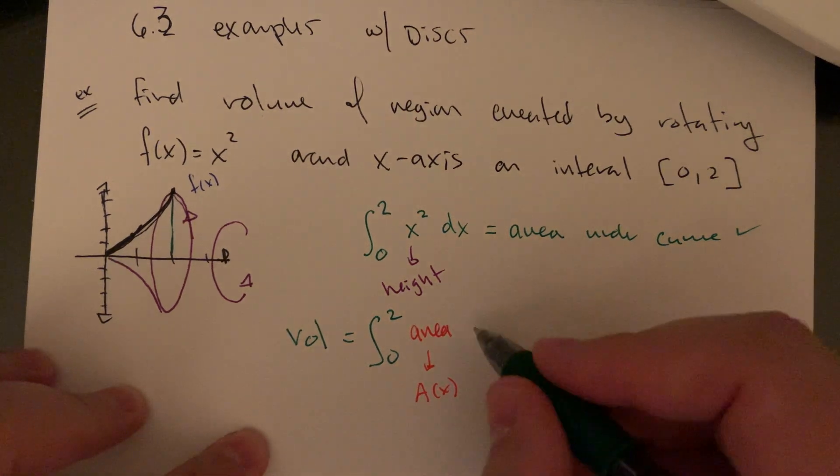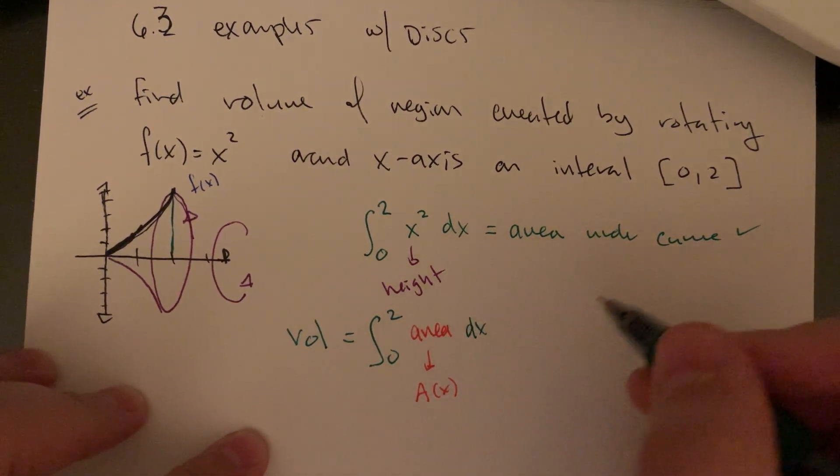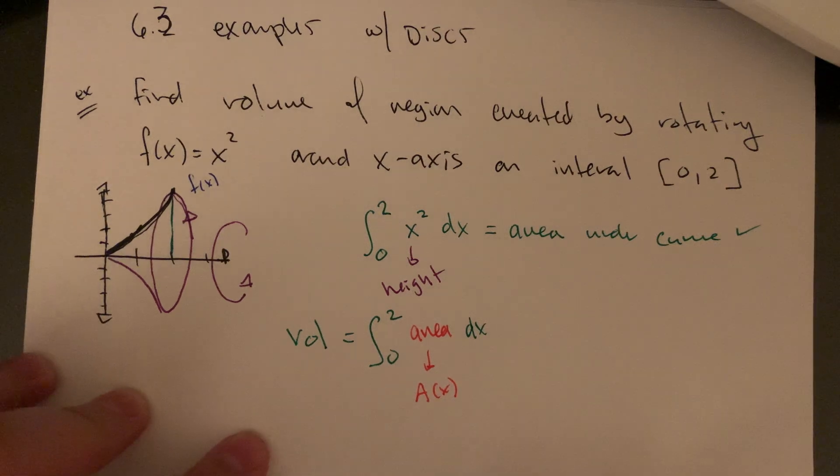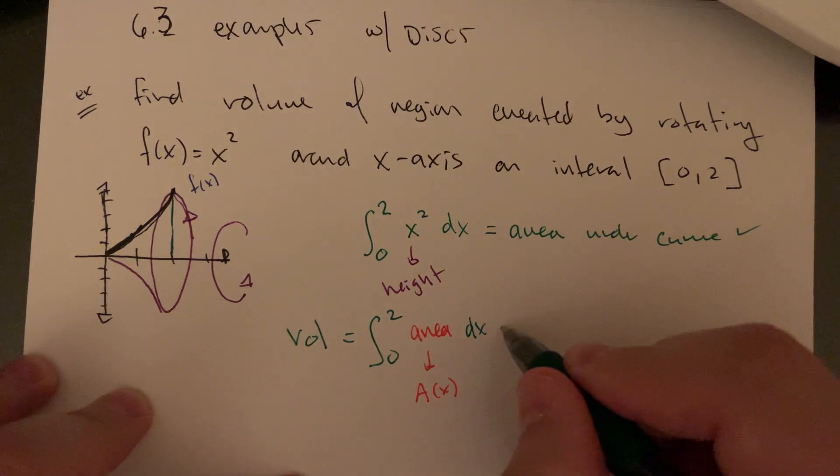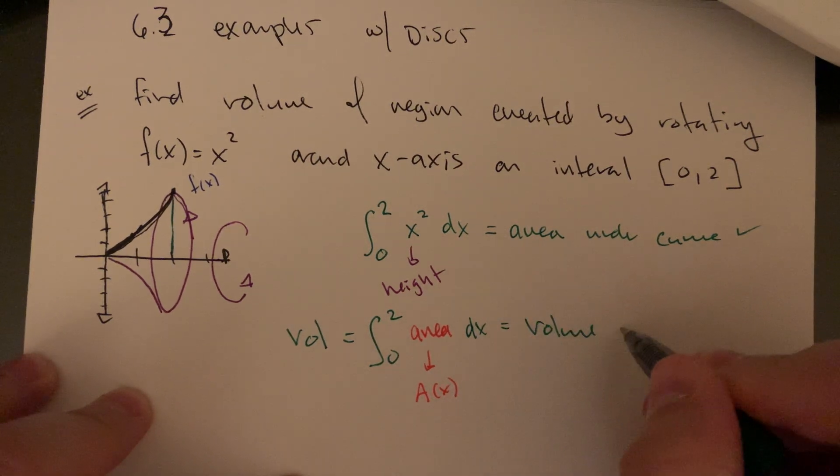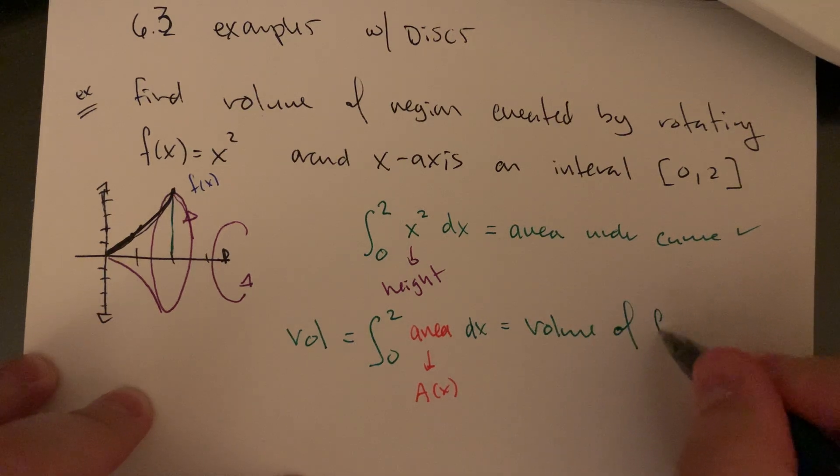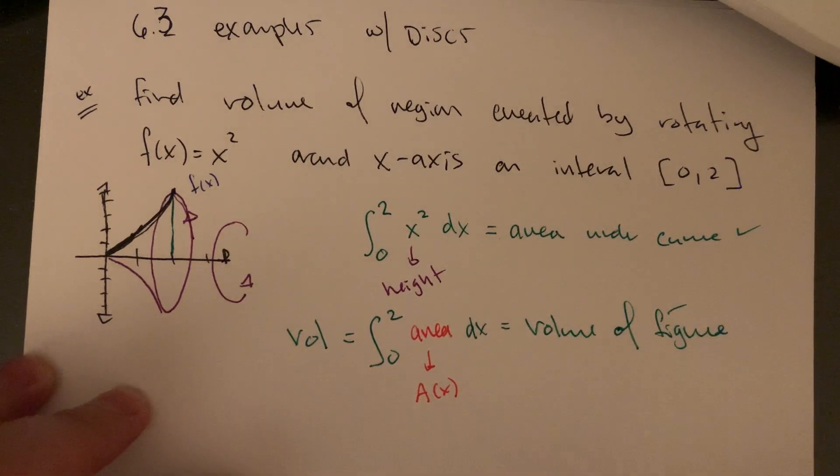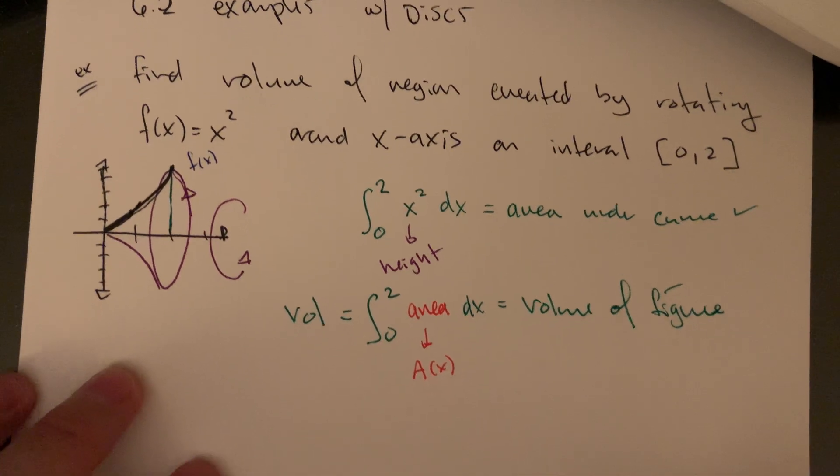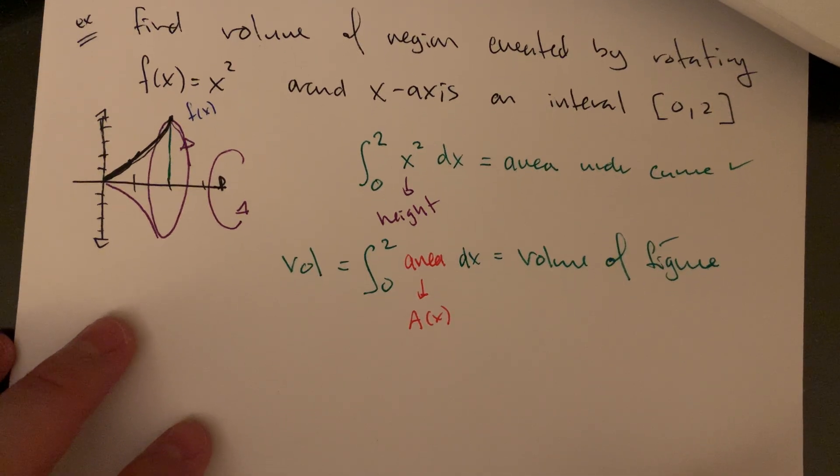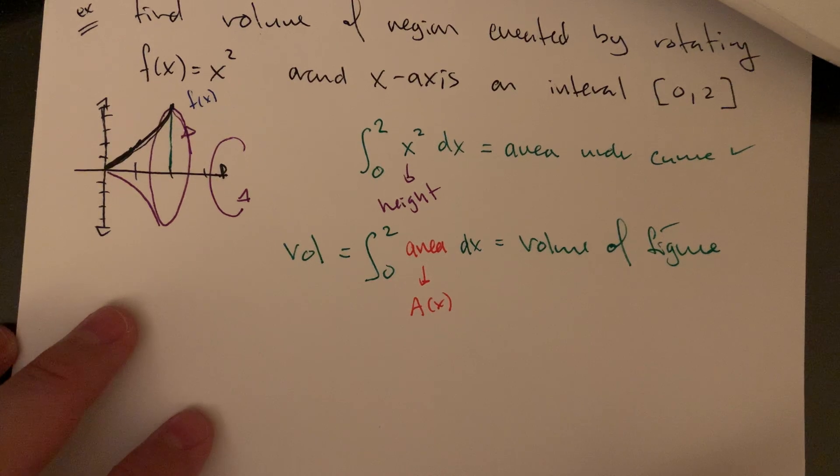I'm just going to write 'area' to match what I did here when I said 'height.' This should get us the volume of our figure, of our rotated created figure. The catch is, how do I represent the area that I'm creating? What would this area function look like?